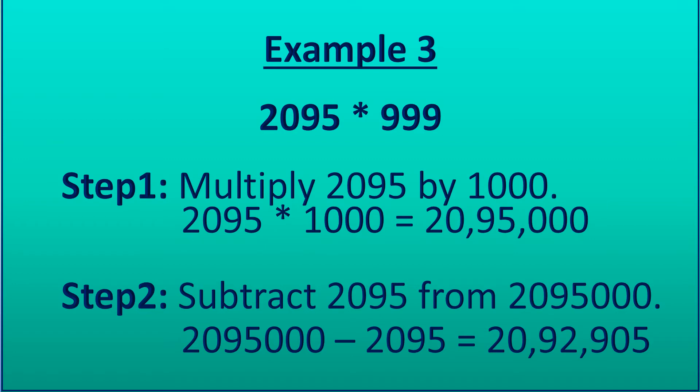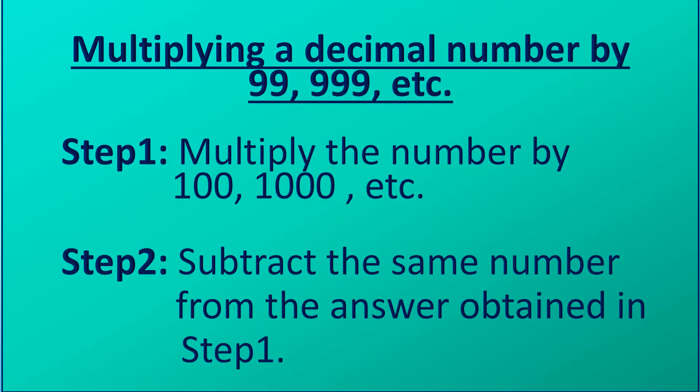We will see an example now. Let's multiply 2095 by 999. Step 1: multiply the given number by 1000. Step 2: subtract the answer from the answer obtained in step 1. Now we will multiply a decimal number by 99, 999, etc.